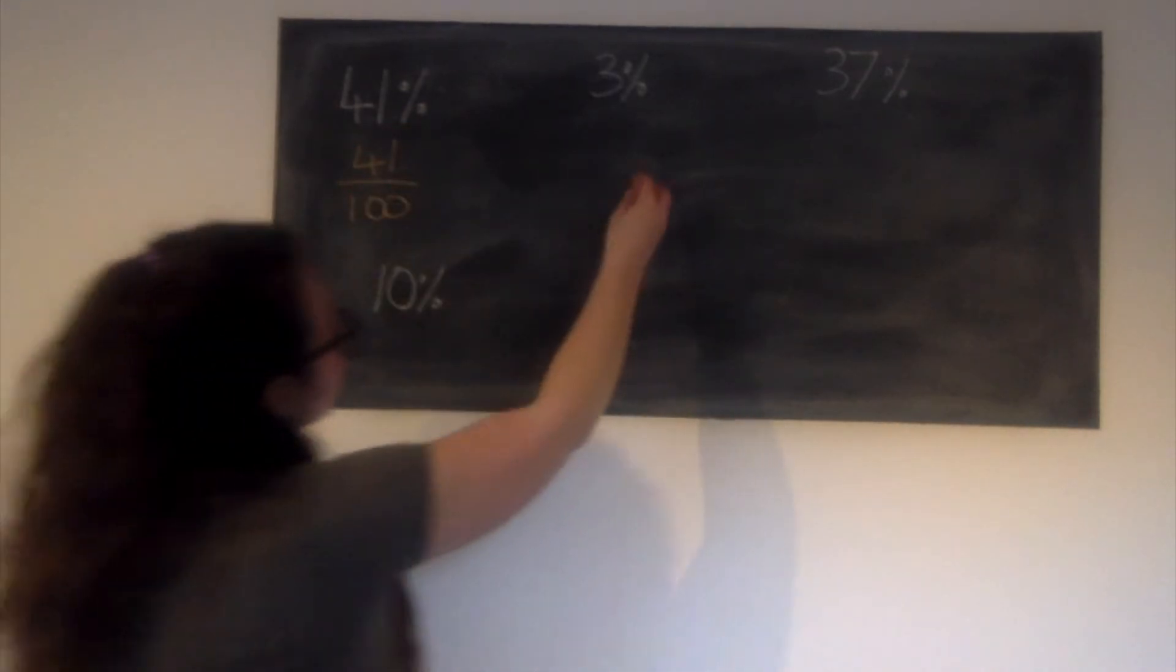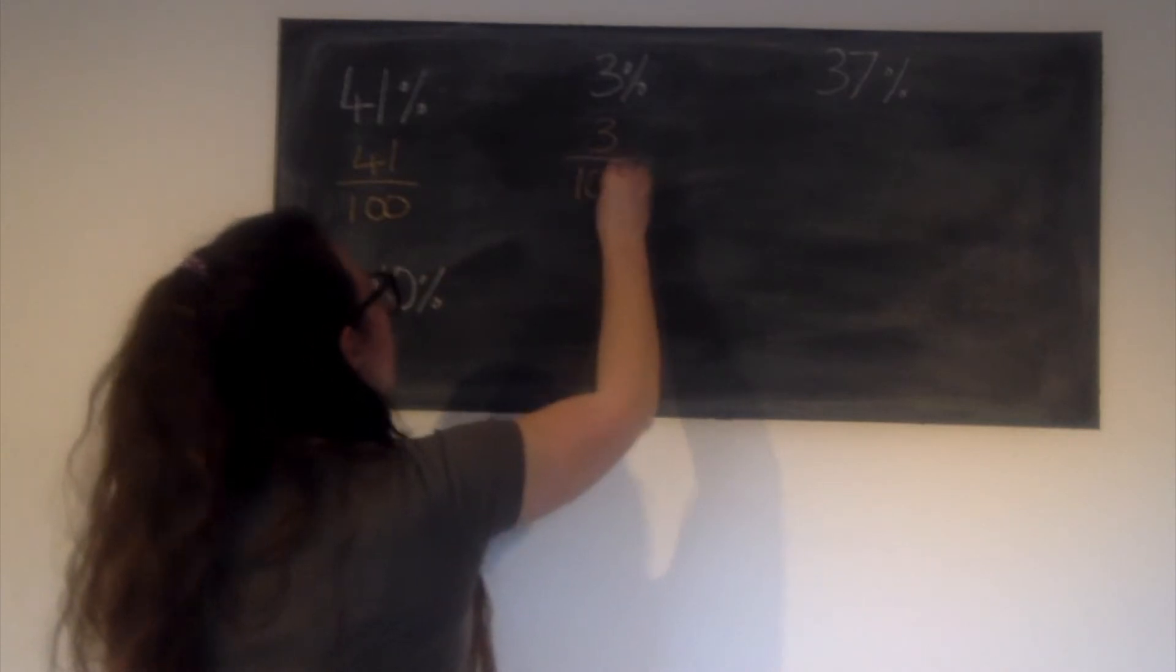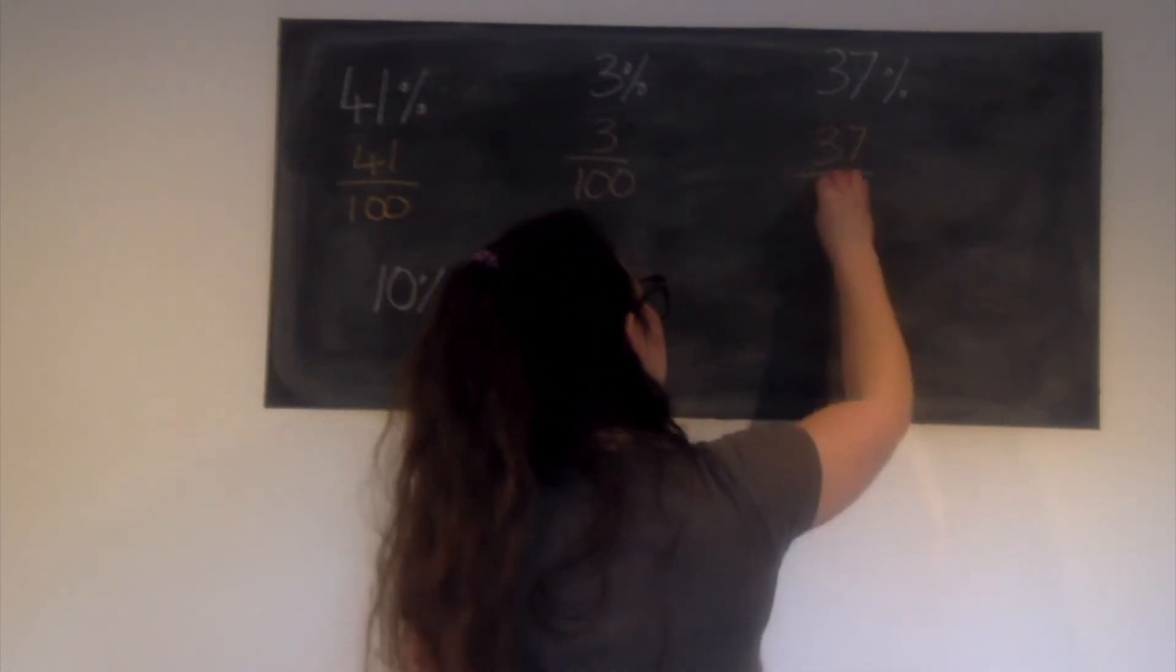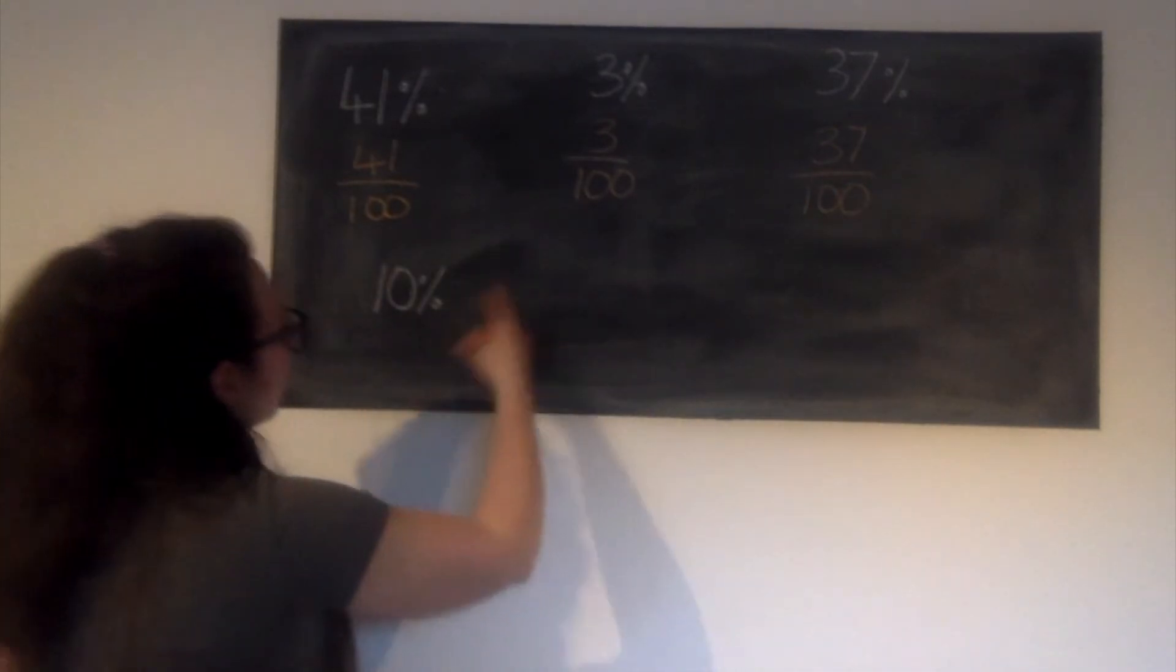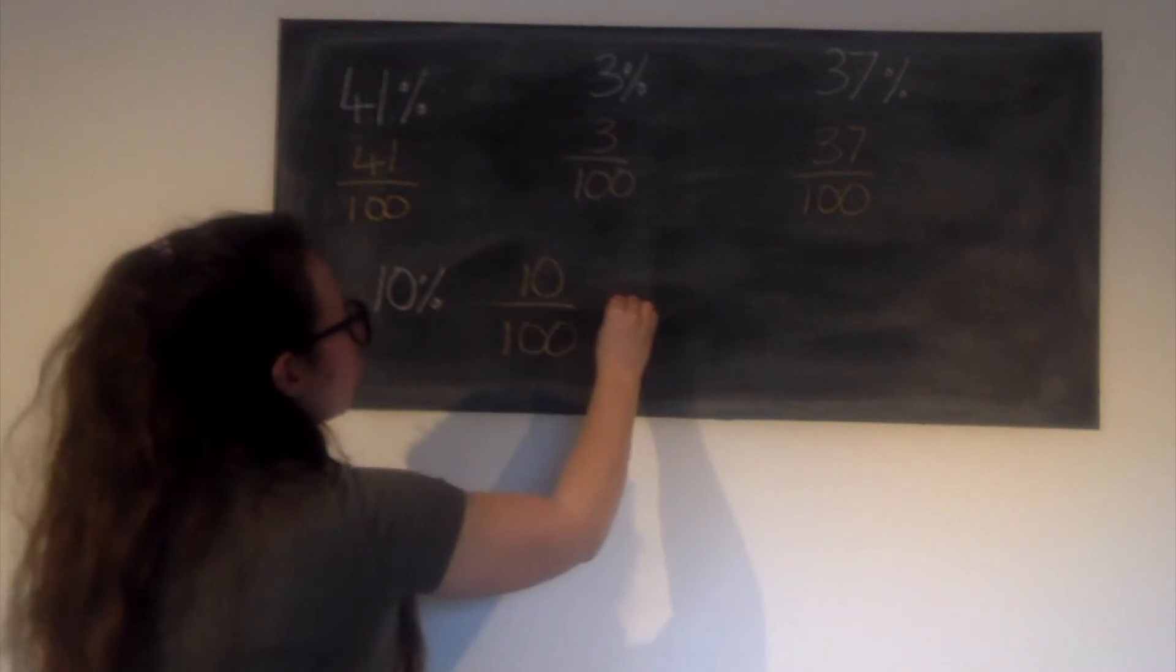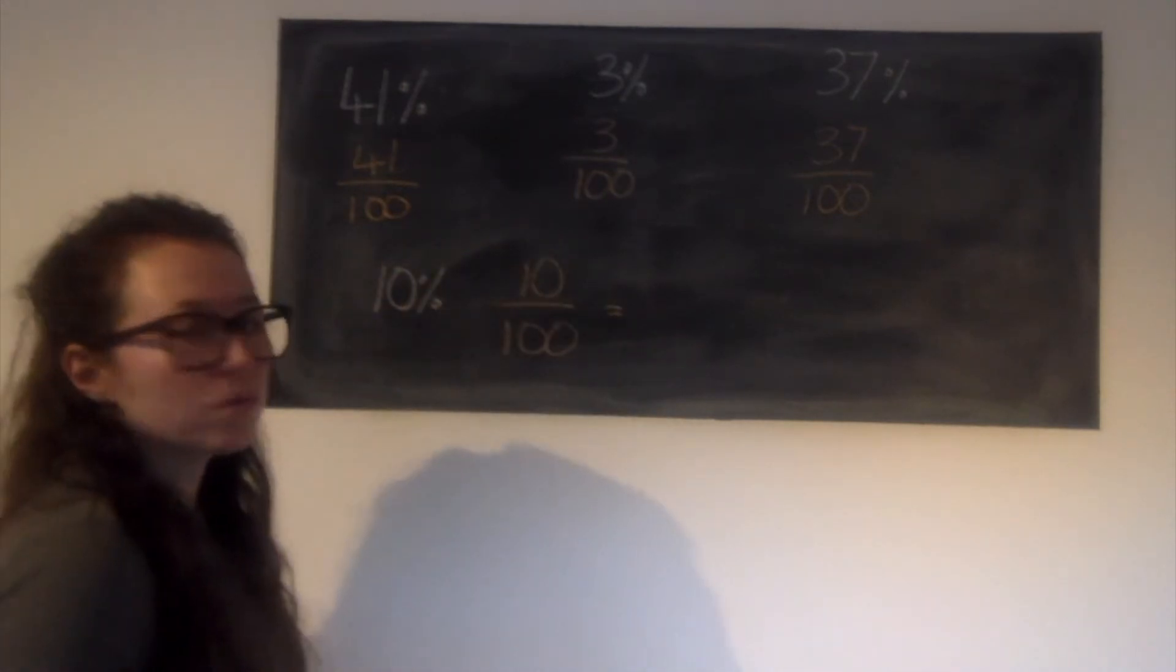The next one, 3% is equal to 3 hundredths. The next one, 37 hundredths. And this one is 10 hundredths, but I asked for it in its simplest form. You could simplify some of the others as well.